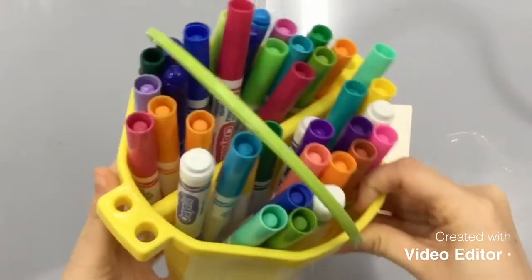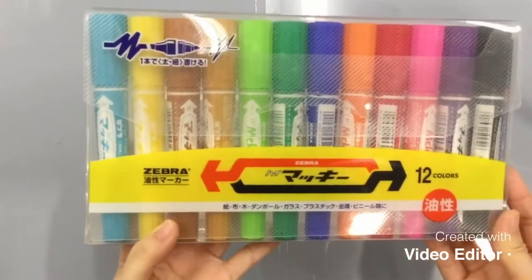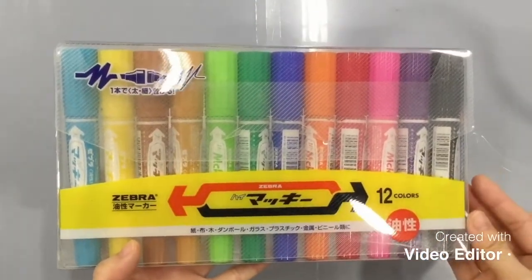There are many types of markers, but I want us to look at water-based markers, which are washable, and oil-based markers, another name for it is permanent marker. We are going to find out how these two markers are different from one another.